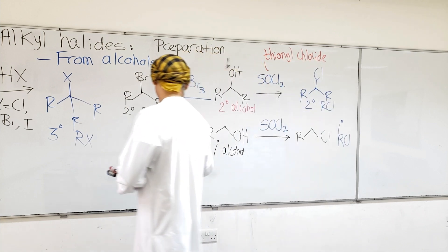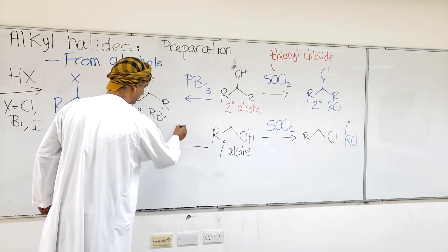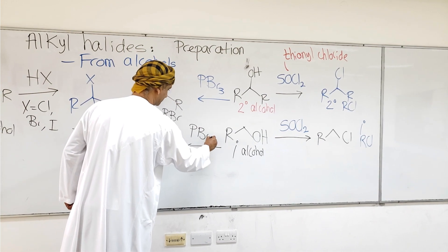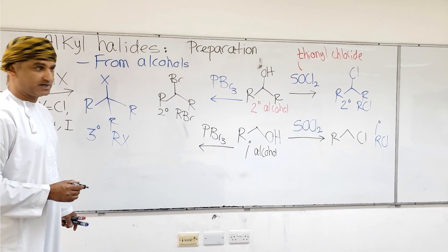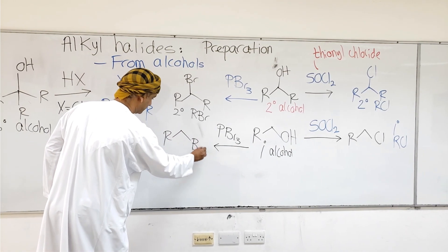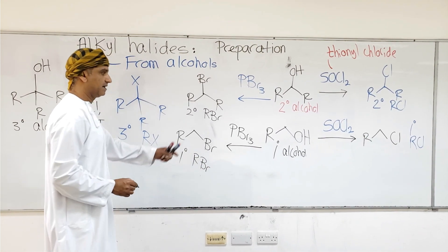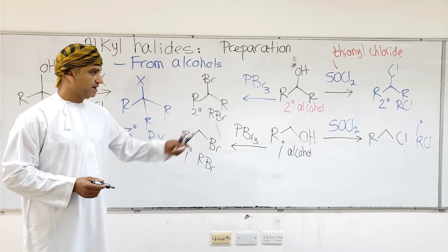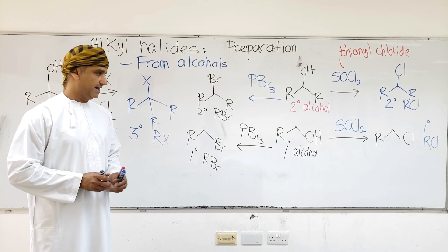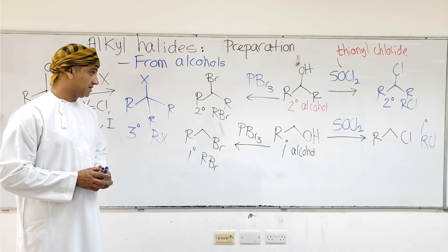If a primary alkyl bromide is needed, then the primary alcohol is reacted in a similar way to secondary alcohols — with phosphorus tribromide — and the corresponding primary alkyl bromide is obtained. Primary alcohols can be converted to the corresponding alkyl chloride with thionyl chloride, or to the corresponding alkyl bromide with phosphorus tribromide.